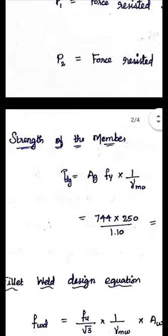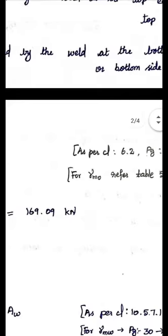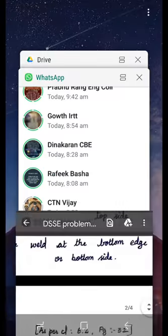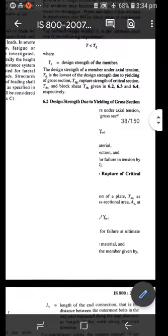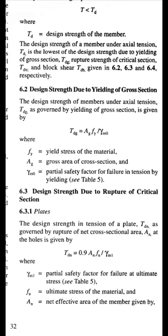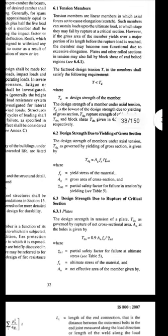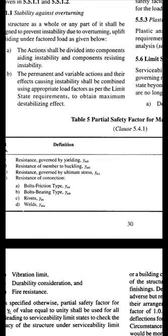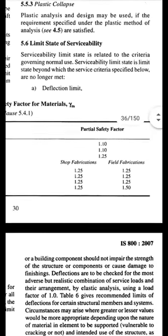First, calculate the strength of the member: Tdg = Ag × fy × (1/γm0). This formula is from IS 800 clause 6.2, page 32. Here, Ag is the gross area, fy is the yield stress of the material. For Indian structural steel, the yield stress is 250 MPa. γm0 is the partial safety factor from Table 5, page 30, and its value is 1.10.